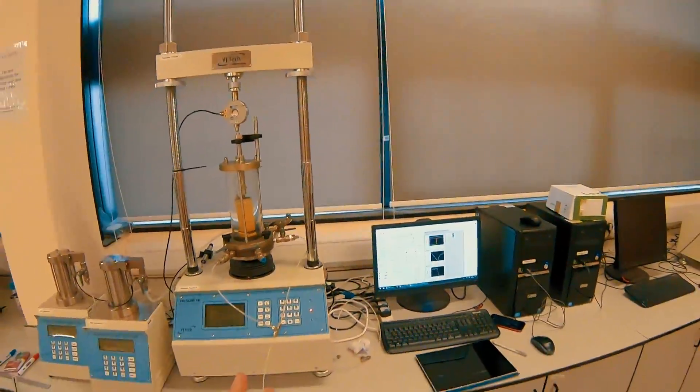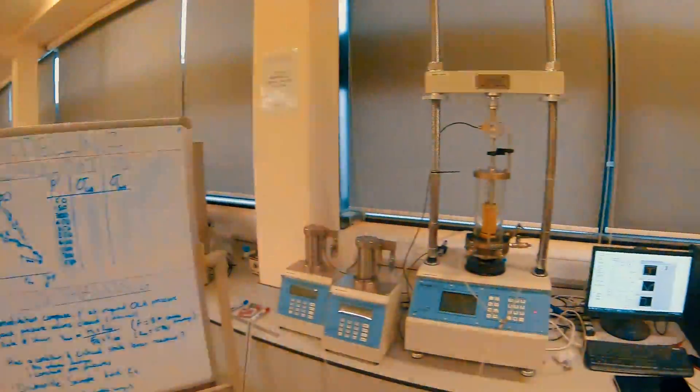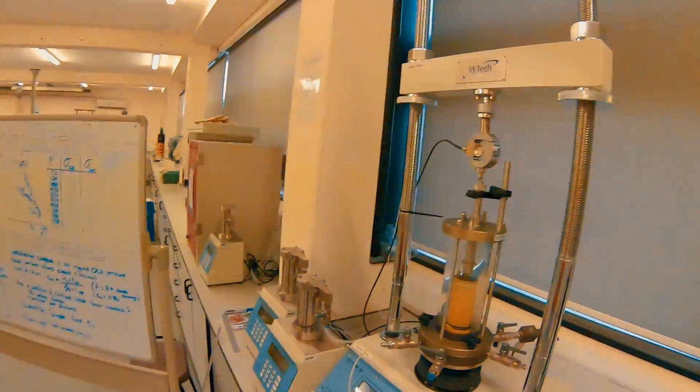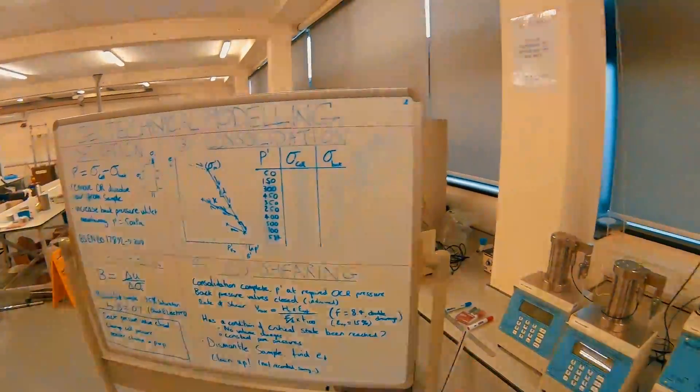Then we will look at testing the level of saturation within our sample and that's done with a B check. We'll cover that in the next video, and once we have a B check value we agree with, then we can look at consolidating our sample.